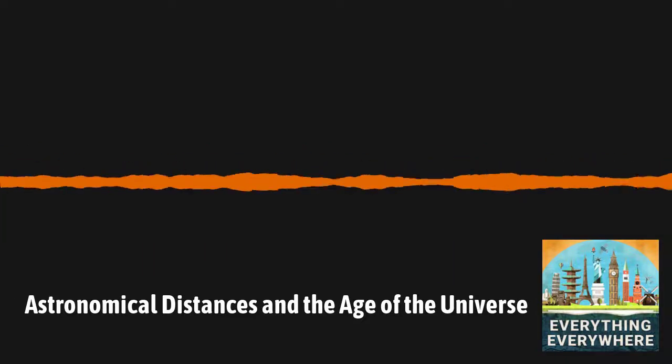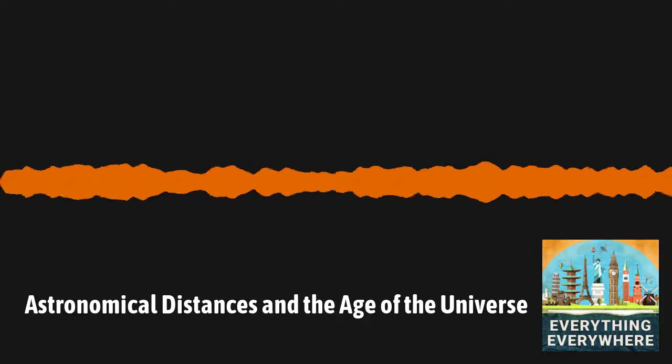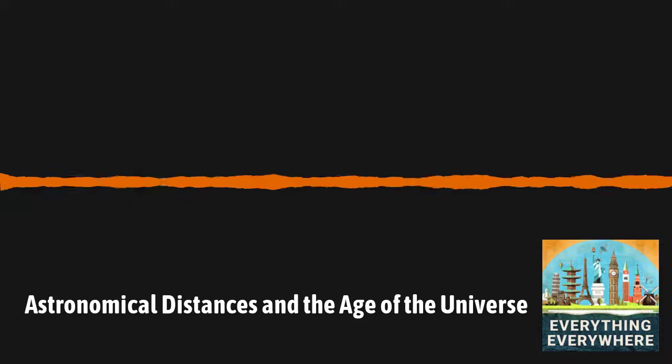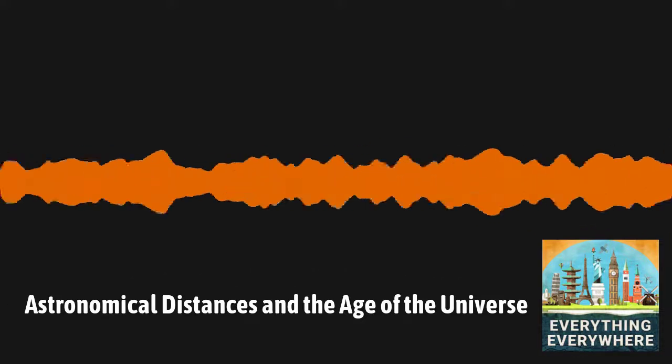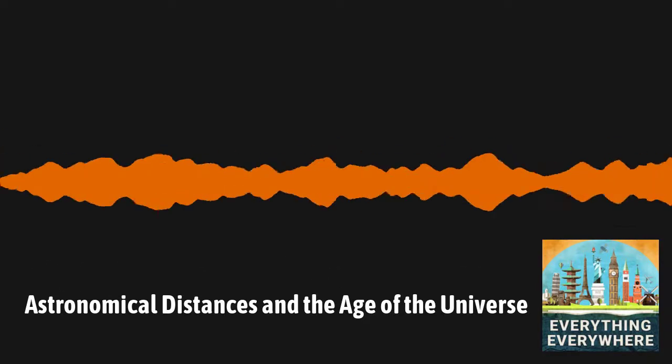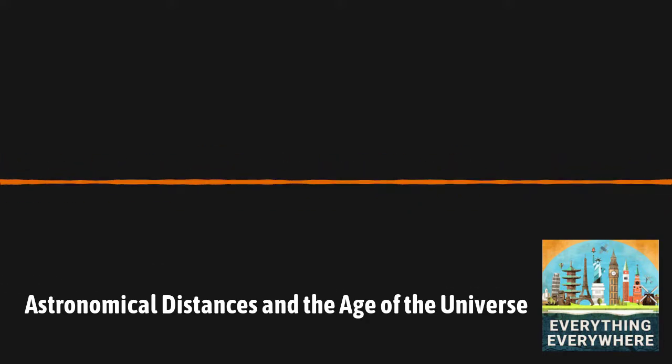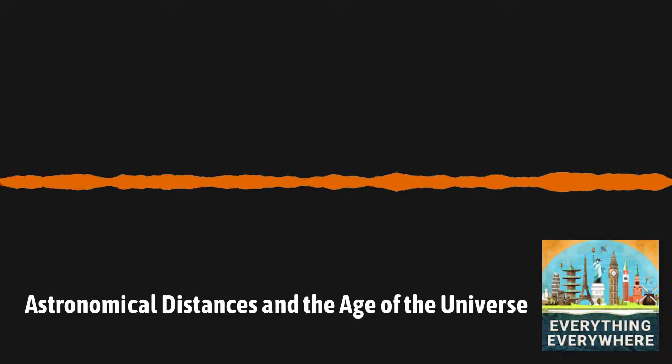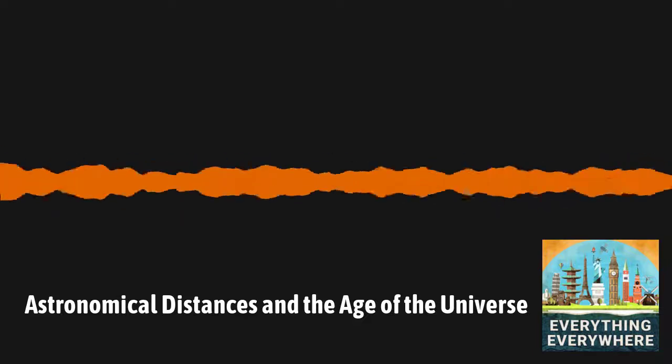Every so often, astronomers will publish photos taken with an astronomical telescope and say that the object they captured is billions of light-years away. But how can they know the distance of something from just looking at it? Furthermore, astronomers claim that the universe is almost 14 billion years old. And how could they possibly know that? Well, there are answers to these questions. And surprisingly, astronomical distance and the age of the universe are closely intertwined. Learn more about astronomical distances and the age of the universe on this episode of Everything Everywhere Daily.